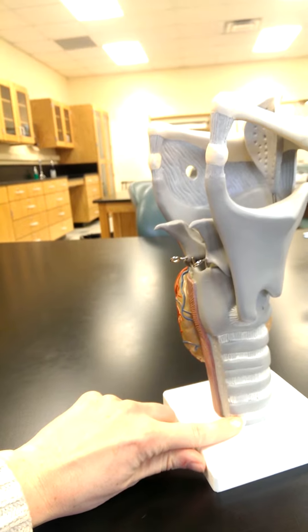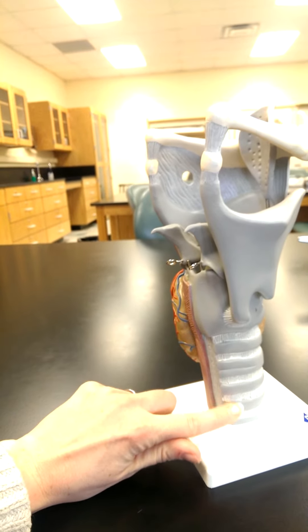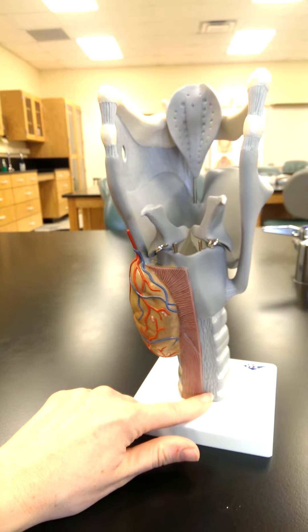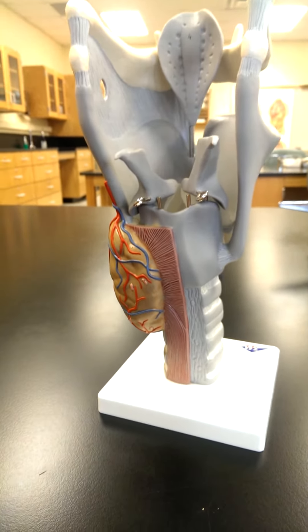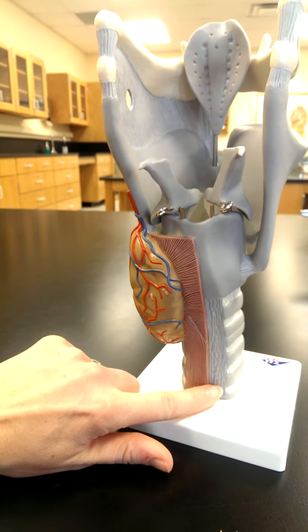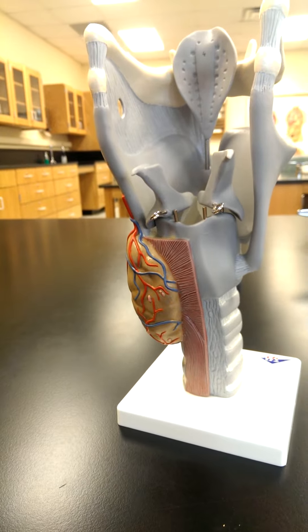Inferiorly, I see the trachea. I see the rings of hyaline cartilage, and I notice that it is open posteriorly. So those rings within the trachea are not complete circles. They're actually C-shaped, leaving room in the back for the expansion of this, which is the esophagus.